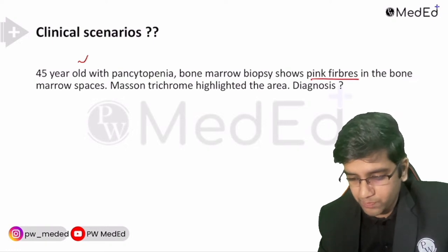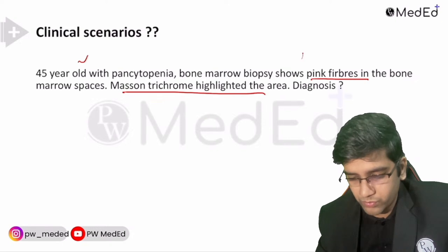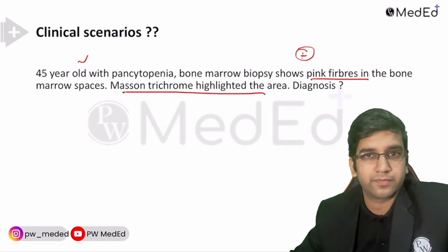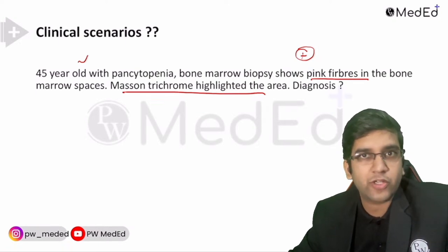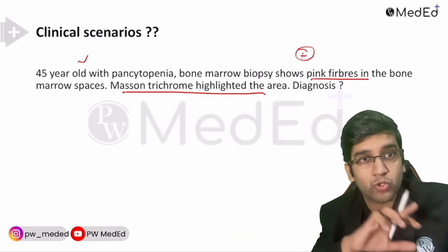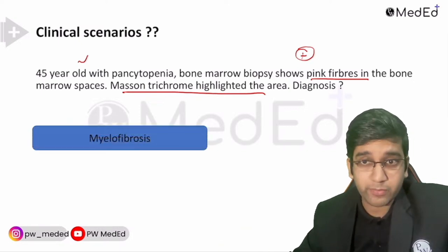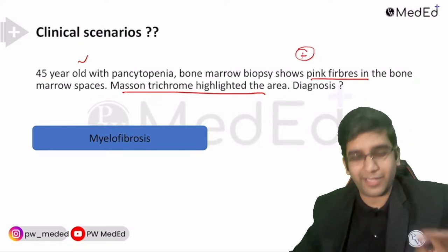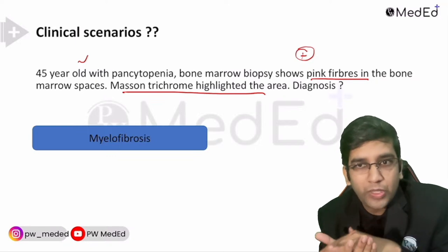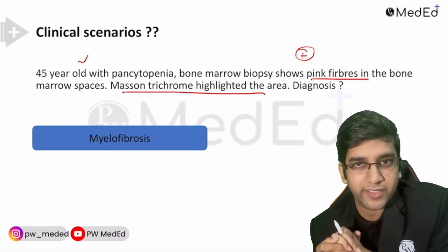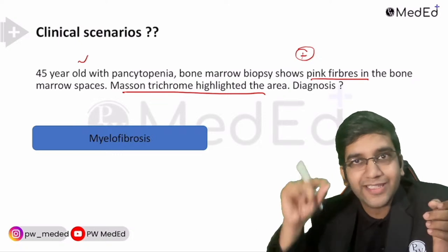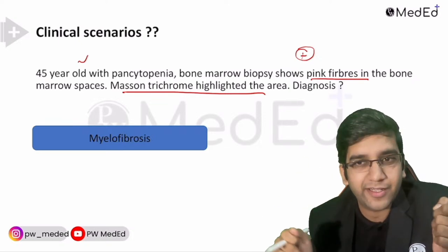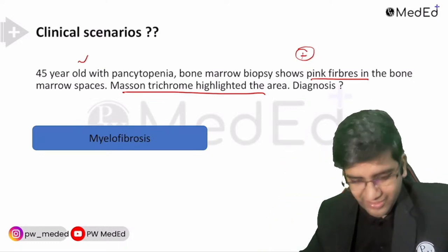45-year-old, pancytopenia, bone marrow shows pink fibers in the bone marrow spaces, Masson trichrome positive. Masson trichrome highlights collagen. In which condition do you see collagen causing pancytopenia in an elderly person? Myelofibrosis. Again, simple — Masson trichrome is for collagen, and the integration is the only thing required. In a three- or four-line scenario-based question, all the information is available — the only thing needed is integration. That's what we're learning in the next 45 minutes.